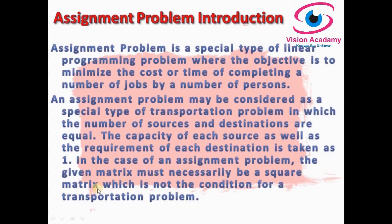The given matrix must necessarily be a square matrix. The capacity may be A, B, C and the requirement must also be A, B, C. When the capacity is A, B, C, the requirement must also be A, B, C. That is the core concept in the assignment problem — the matrix must necessarily be a square matrix.